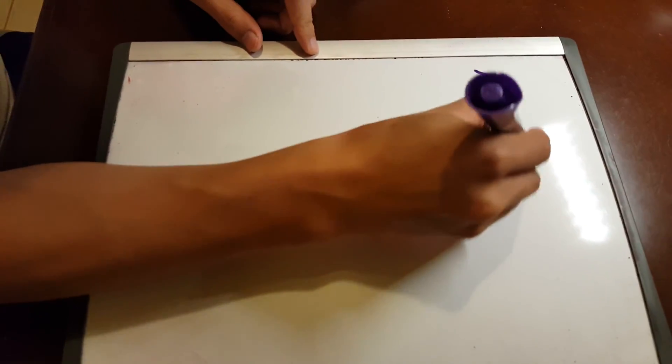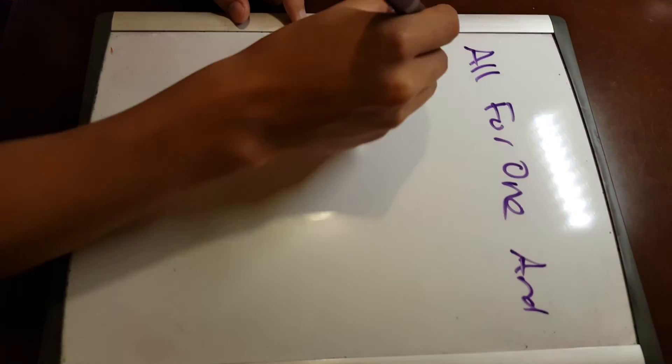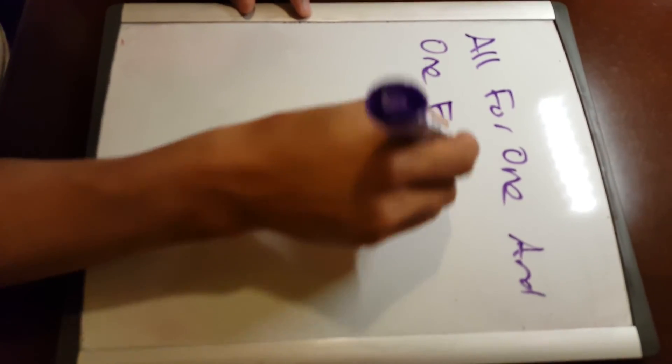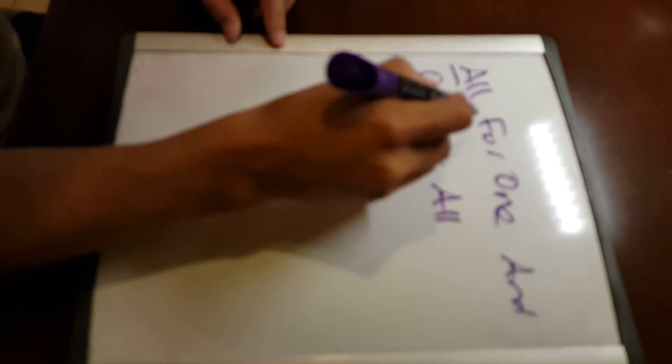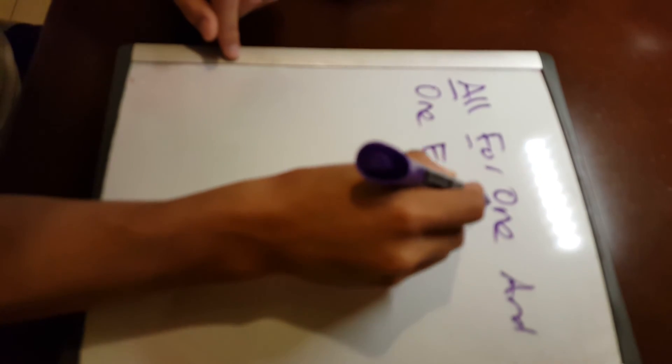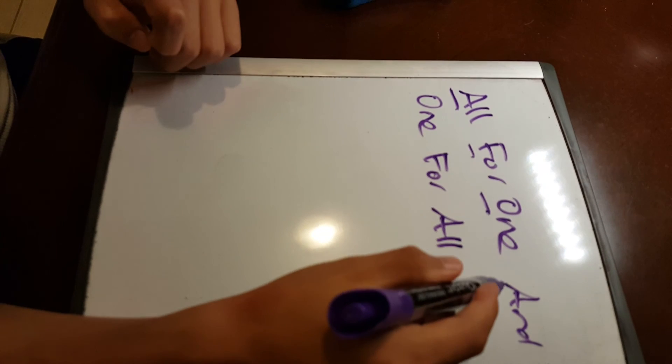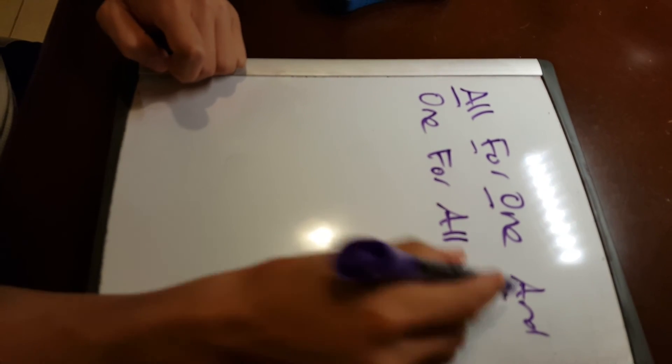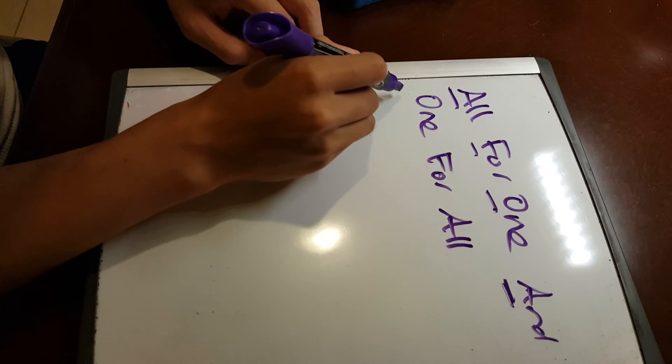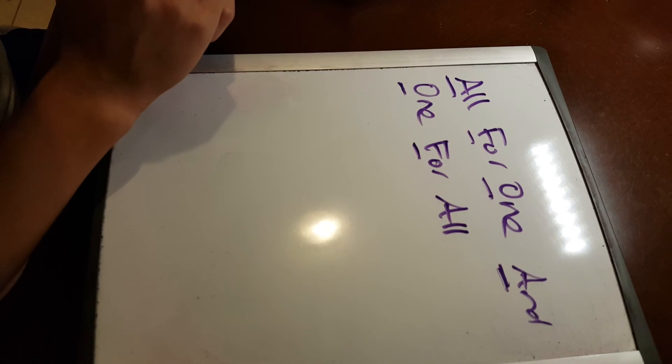For your hypothenar and thenar muscles, the mnemonic is 'all for one, and one for all,' going from lateral to medial. You have your abductor pollicis brevis, flexor pollicis brevis, and deep to both of those, your opponens pollicis. Between your thumb and index finger is your adductor pollicis. On the hypothenar side, deep you have opponens digiti minimi, then flexor digiti minimi, and lastly abductor digiti minimi.